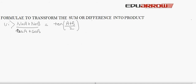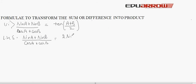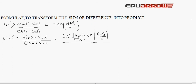We will see one more question. It is given that (sinA + sinB) / (cosA + cosB), and we have to show this equals tan[(A+B)/2]. Taking the left-hand side, we have (sinA + sinB) / (cosA + cosB). Applying the formula sinC + sinD in the numerator, we get 2 sin[(A+B)/2] cos[(A−B)/2].